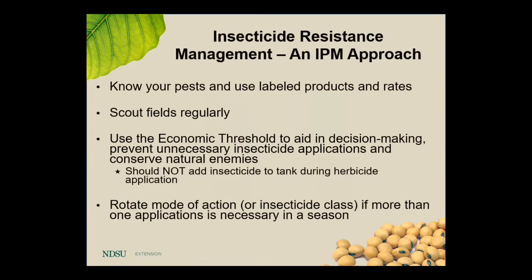So we always want to think about the IPM approach. We now know resistance exists in parts of eastern North Dakota, and as soybeans become more popular to the west, it wouldn't surprise me to see soybean aphid populations showing up there. In 2017, we found them as far west as Drake and Rugby, North Dakota, and in the Rugby area they did make economic threshold. The important thing is to recognize what soybean aphids look like, use labeled products and rates, scout fields regularly — especially in the late vegetative into reproductive stages — given that day-and-a-half generation turnover.